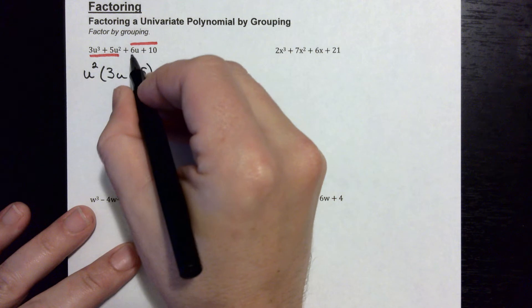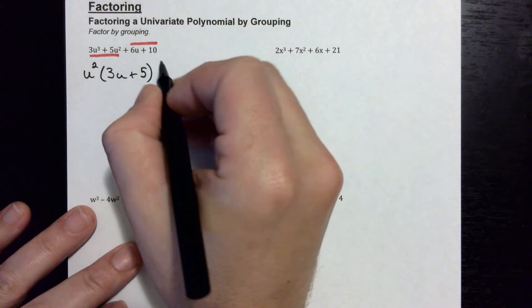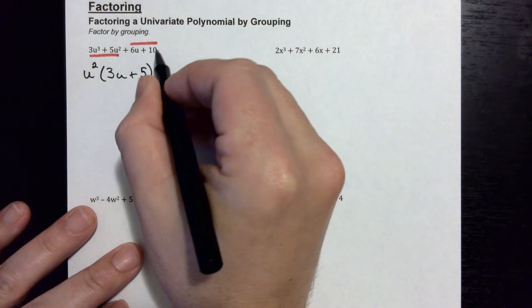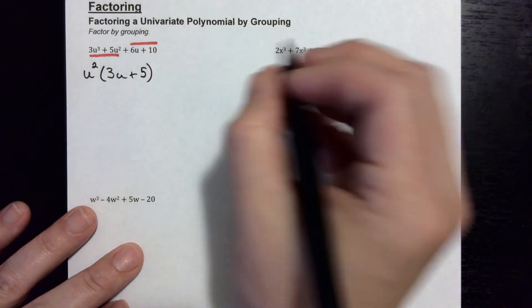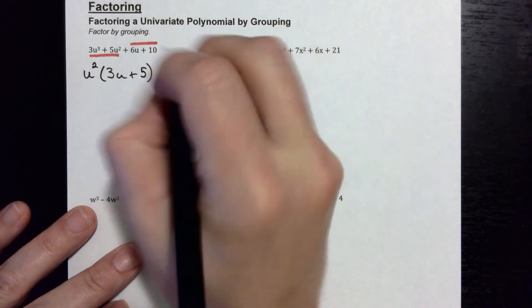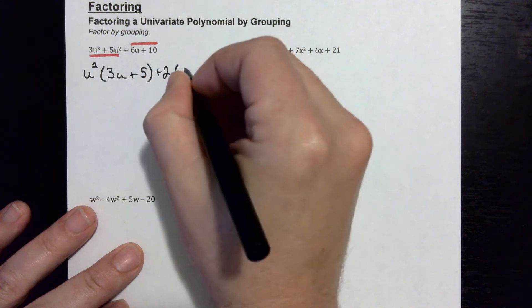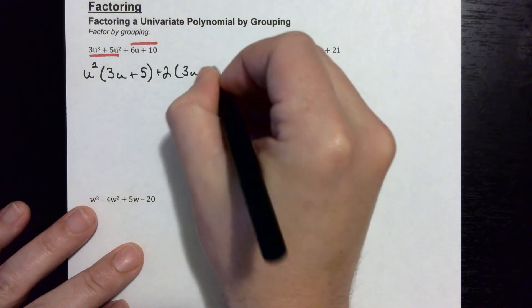Now let's look at the second part. What's the biggest thing I can factor out of both these? Well, you can't do a u because the ten doesn't have a u, but you can factor out a two because both of them are divisible by two. That's the biggest number that you can factor out of both of those. So two, and that becomes three u plus five again.